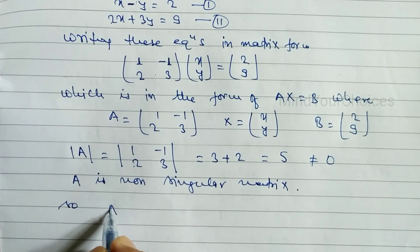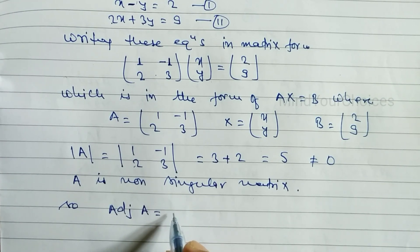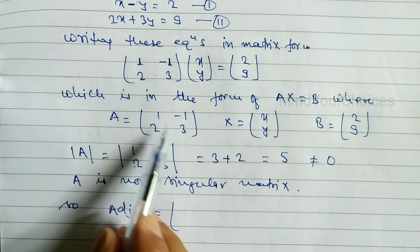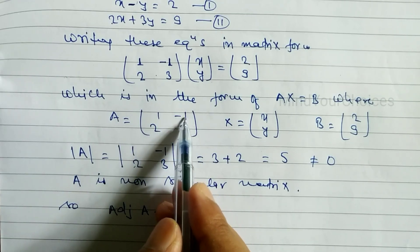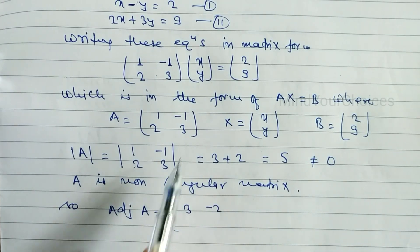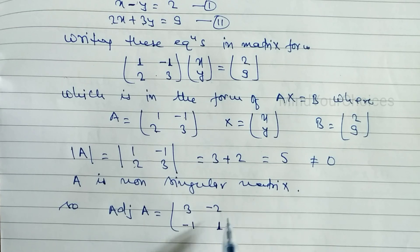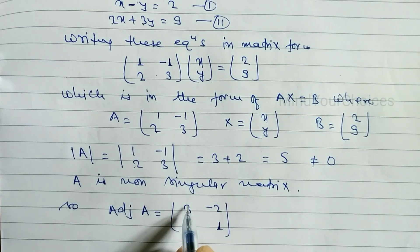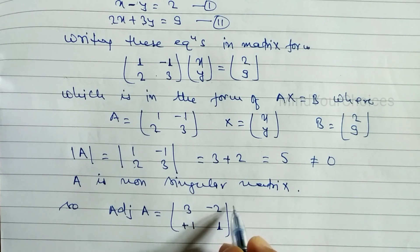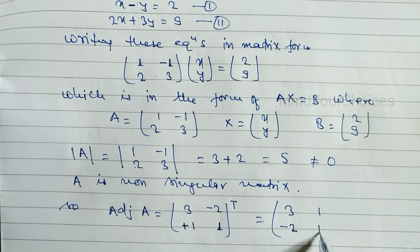Before finding A inverse, we first find the adjoint of A, which is the transpose of the cofactor matrix. The cofactors are: cofactor of one is three, cofactor of minus one is minus two, cofactor of two is one, and cofactor of three is one. Taking the transpose by interchanging rows and columns gives adjoint A equals [3, 1; -2, 1].